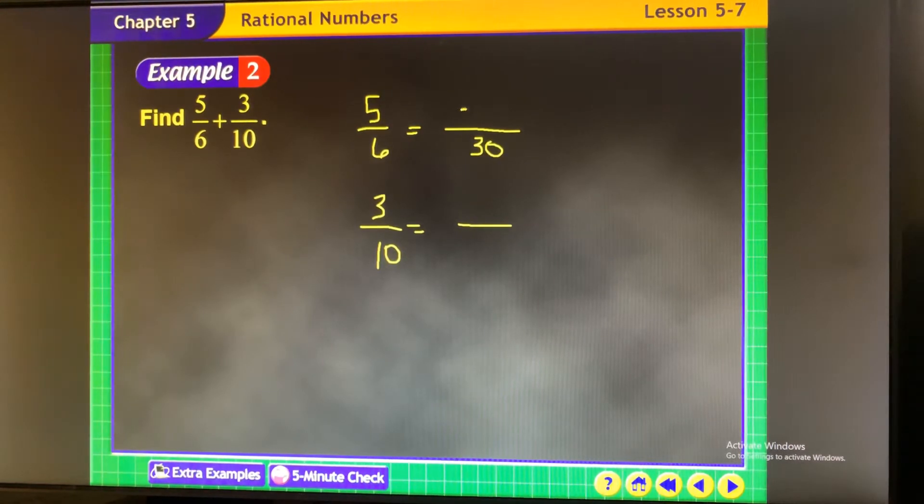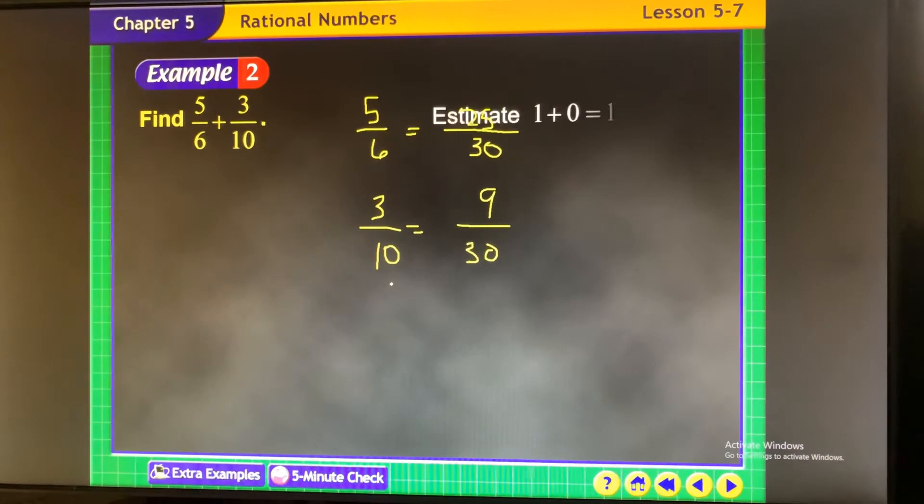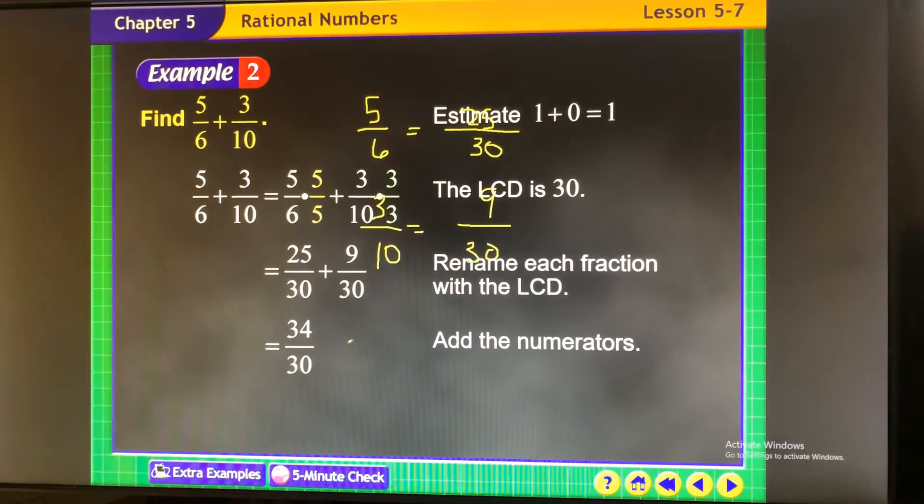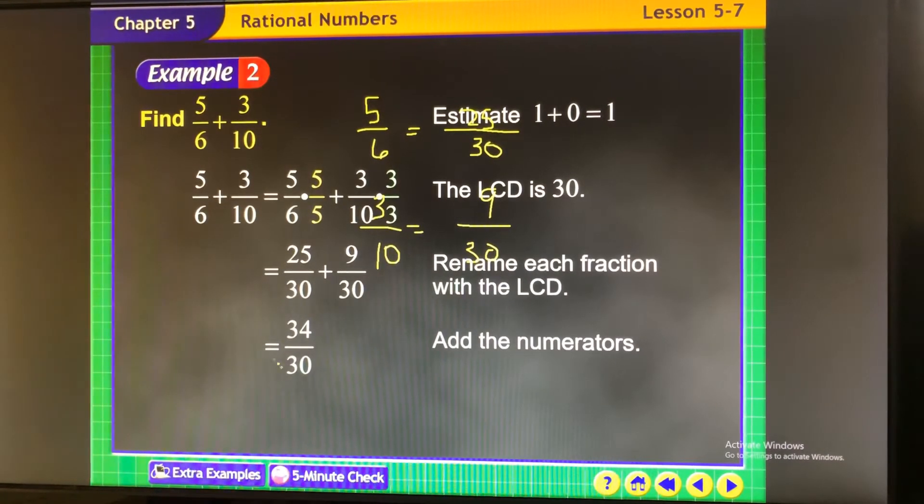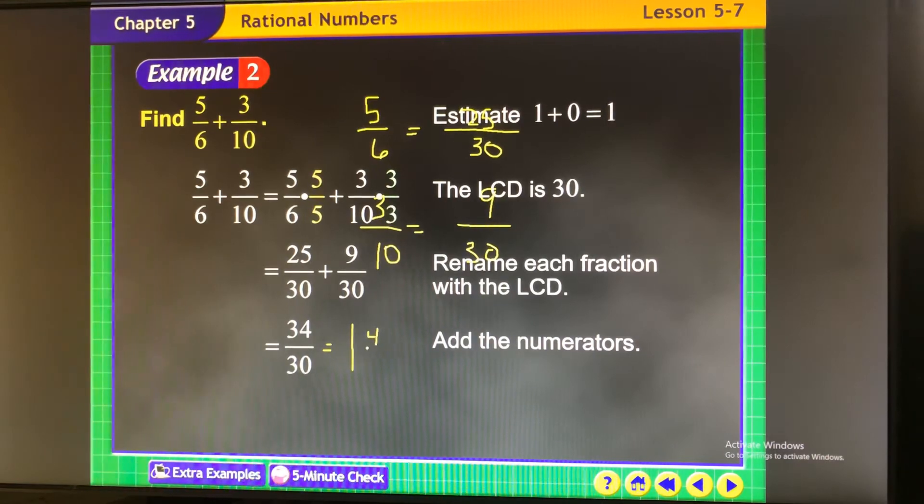which is 30, and then this is 30, which means this is 9, and then you're going to do 25 plus 9 over 30. And you still might have to simplify it in the end because right here I get 34 thirtieths. So how many groups of 30 are in 34? 1 with 4 left over.